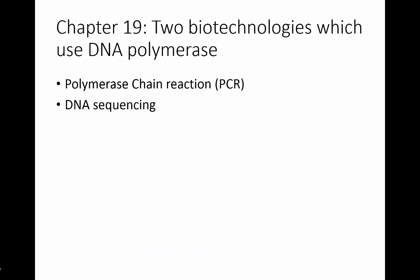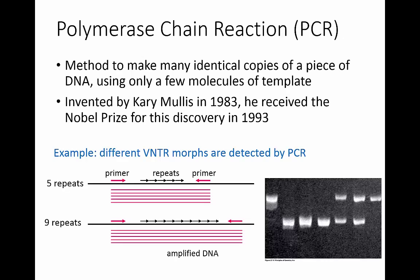Next, I'd like to talk about two biotechnologies that use DNA polymerase. The first is PCR, or polymerase chain reaction. This is a very useful technique that can make a large number of identical copies of a particular piece of DNA. You can start with just very few pieces of DNA template and end up with millions of copies. This technique was invented in 1983 by Kary Mullis, who received the Nobel Prize for this discovery.